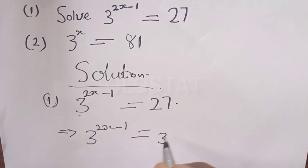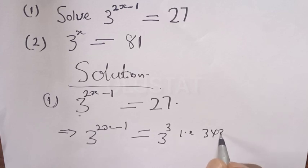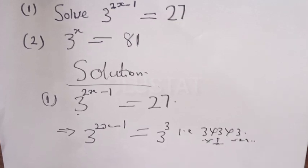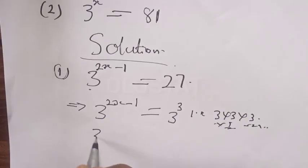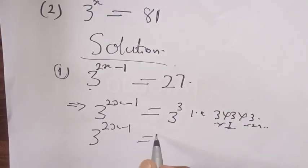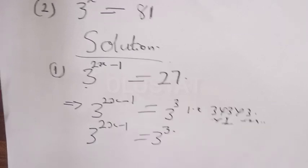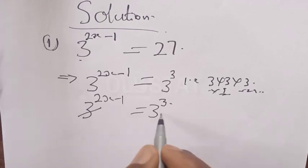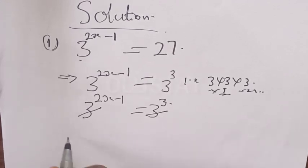That is, 3 times 3 times 3 equals 27, so 27 equals 3 raised to power 3. Therefore, since the base here is 3, we cancel the bases and are left with 2x minus 1 is equal to 3.